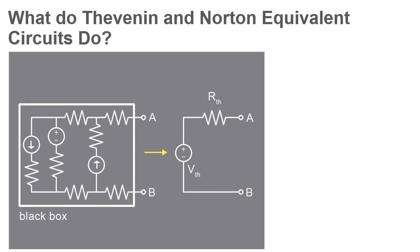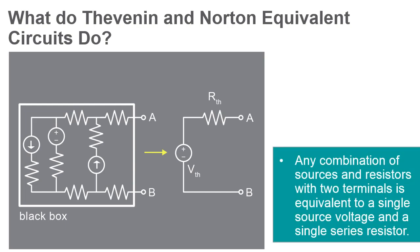Thevenin's Theorem for Linear Electrical Networks states that any combination of voltage sources, current sources, and resistors with two terminals is electrically equivalent to a single voltage source V and a single series resistor R.